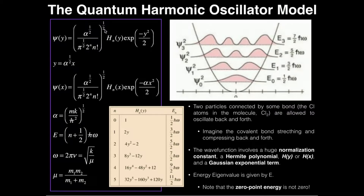The first term, with a one-half power superscript — the square root — all of this in parentheses — is the normalization constant. The normalization constant has alpha to the one-half power, divided by pi to the one-half power, divided by 2 to the n, and divided by n factorial. So if you normalize the quantum harmonic oscillator wave function, you get this normalization constant. We'll talk about alpha in just a minute.